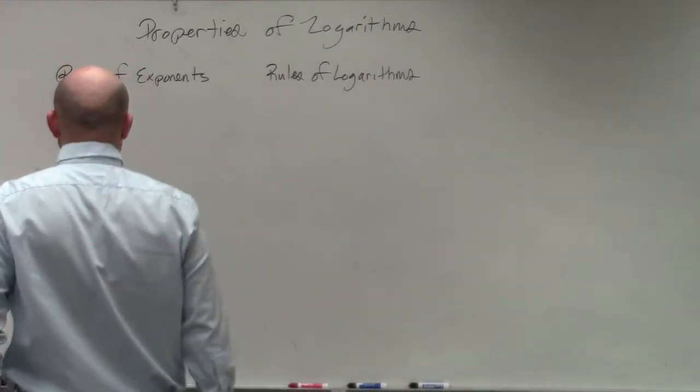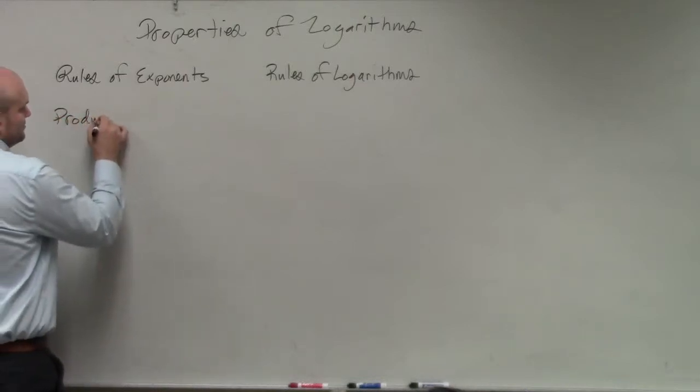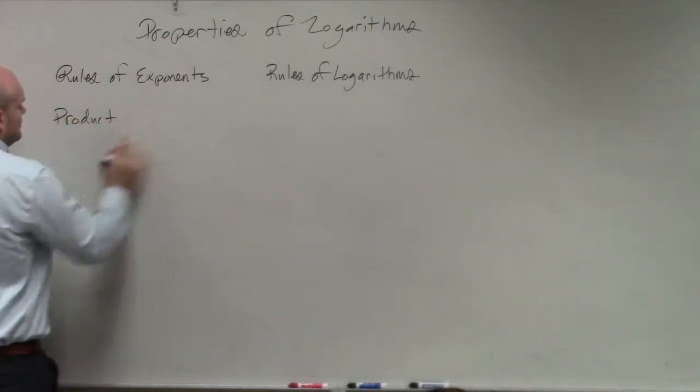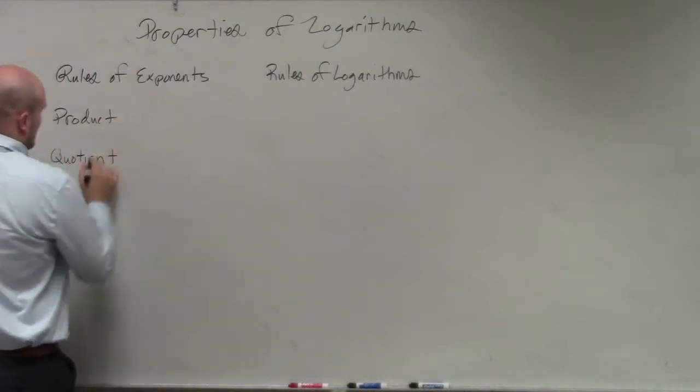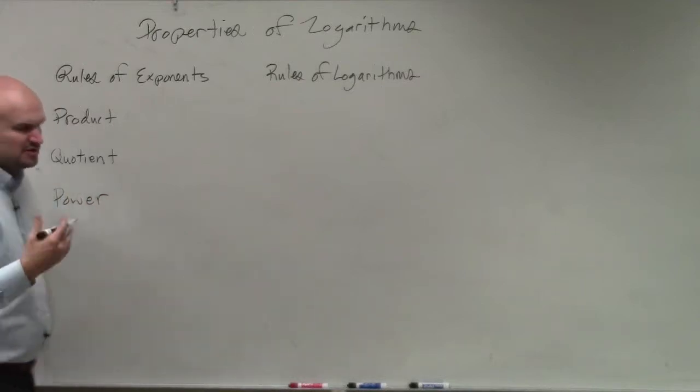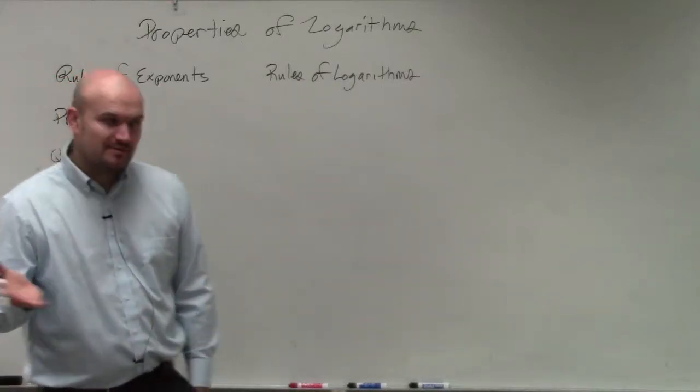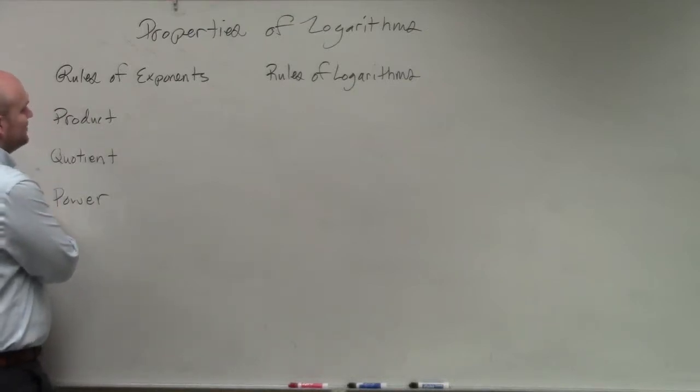So the rules of exponents, if you guys remember, there are basically three rules. There's what we call the product rule, the quotient rule, and the power rule. Those are our three main basic properties that we're going to go through. I know it's been a while for many of you, so we'll just kind of go back through these again.